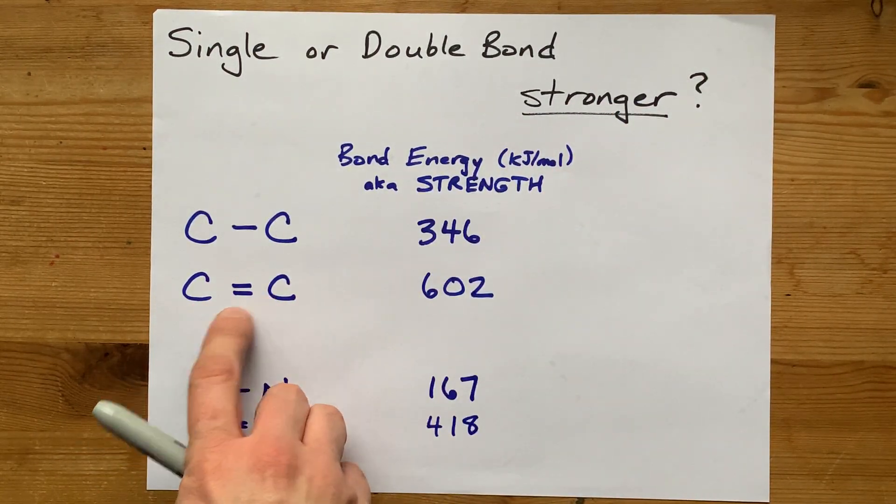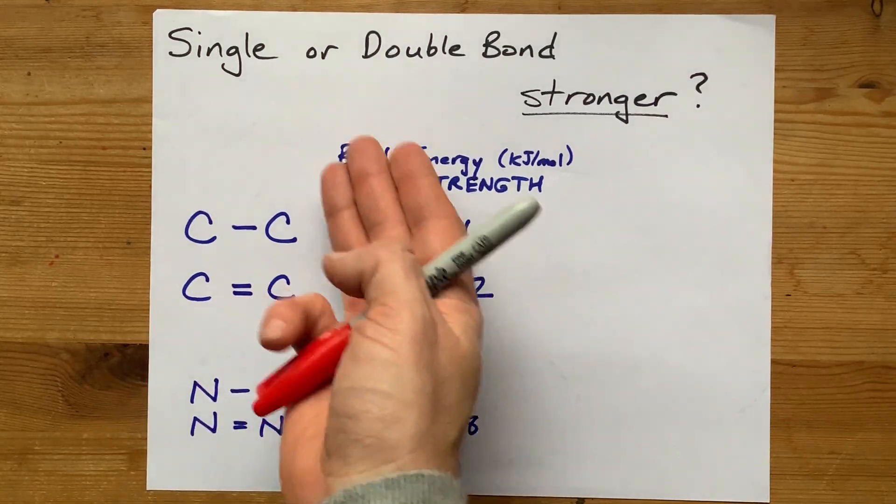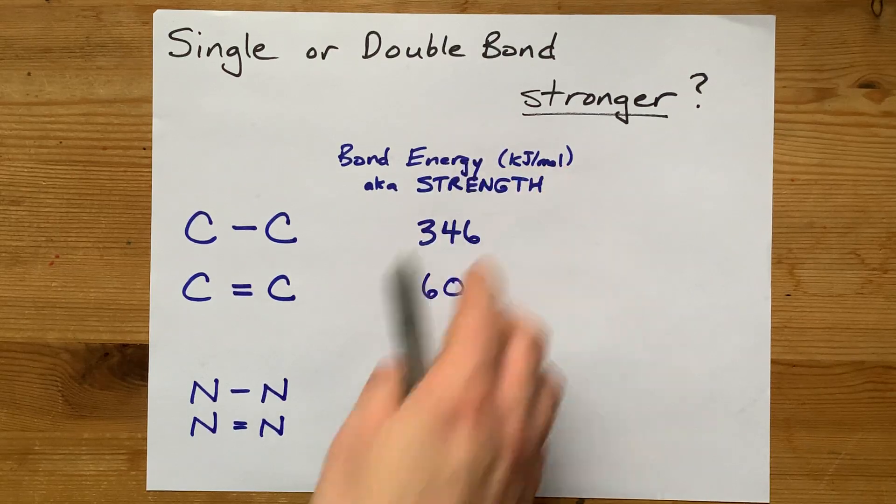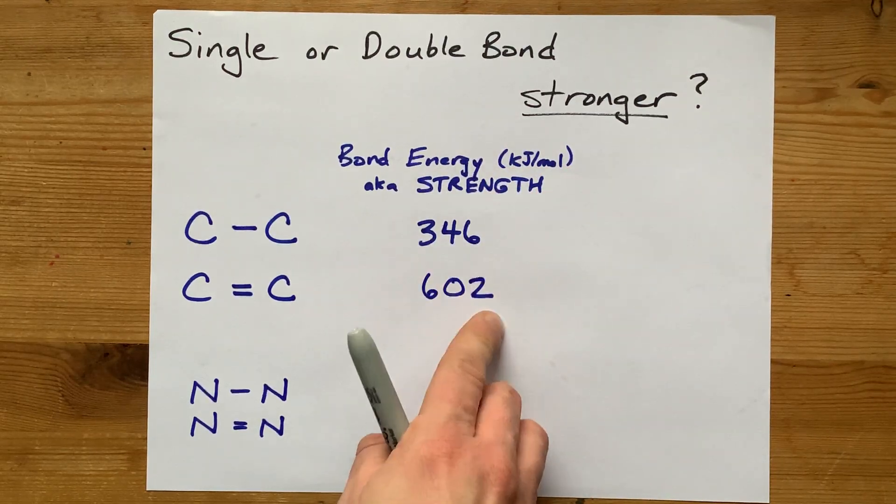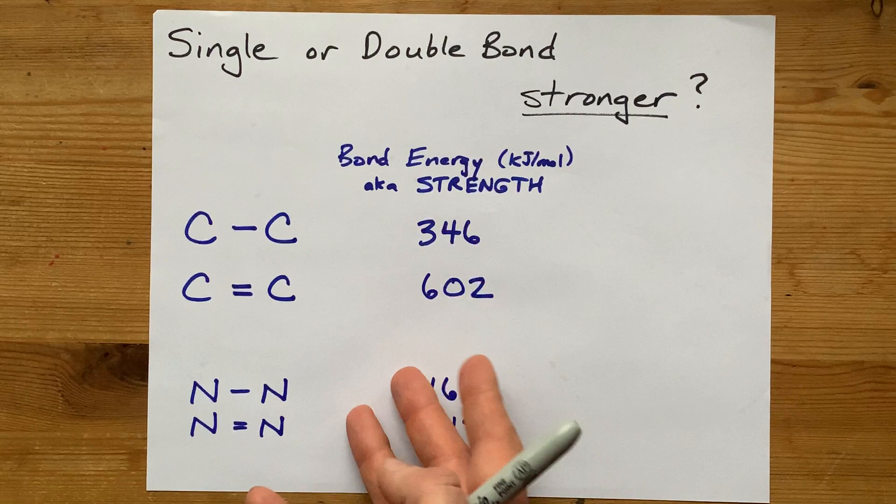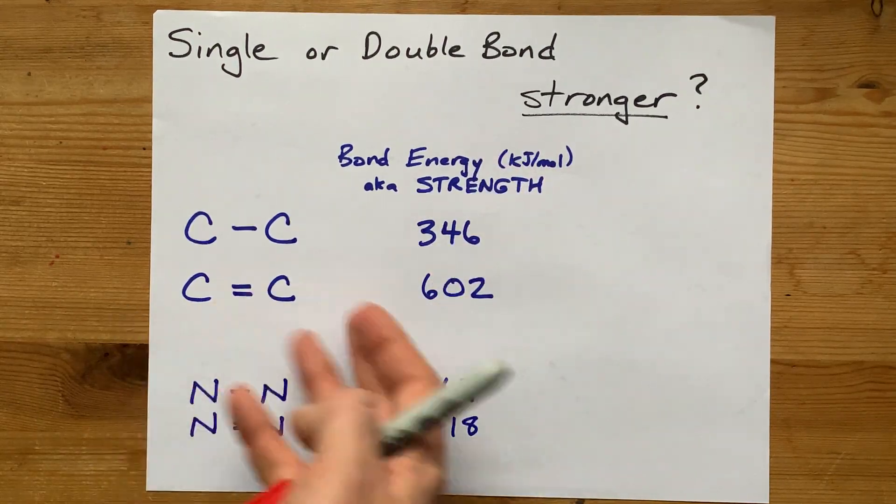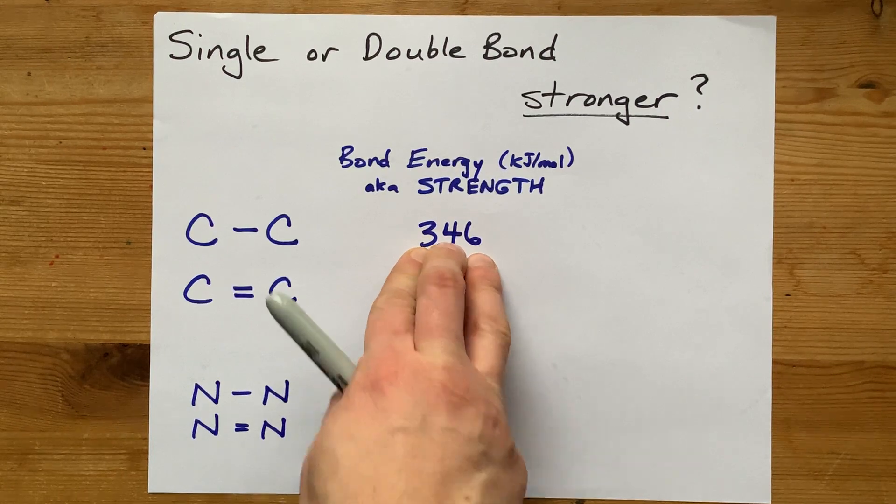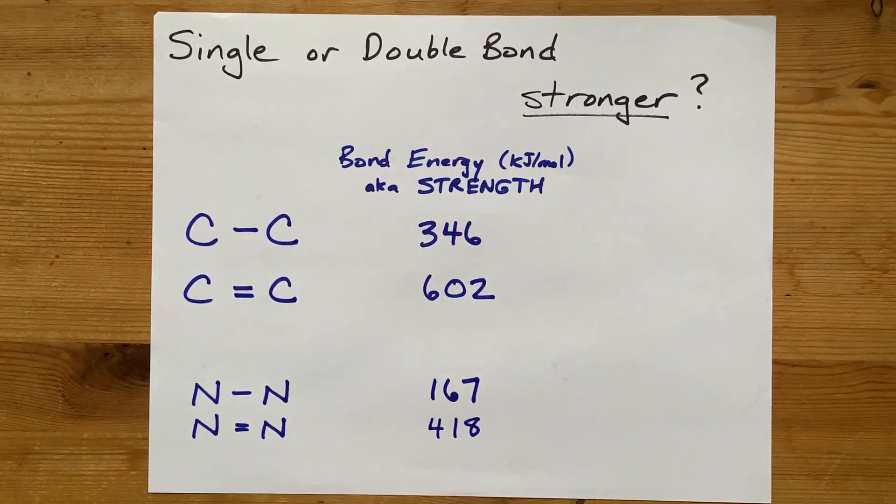Here I've got two carbons double bonded together. The bond energy, which I looked up from a table, is 602 kilojoules per mole. It requires this much energy in kilojoules to break apart one mole of those bonds. If they were only single, it only takes 346 kilojoules of energy to break apart a mole of bonds.